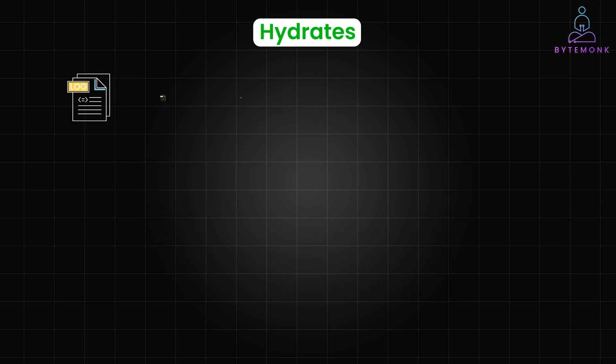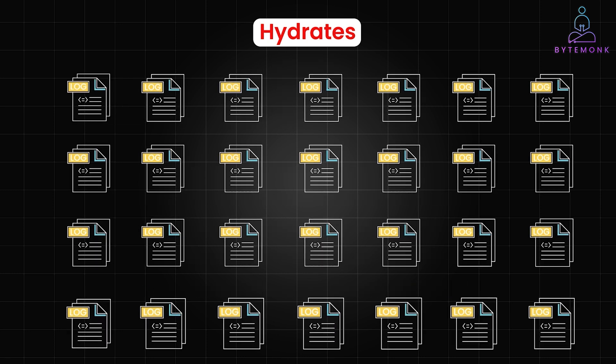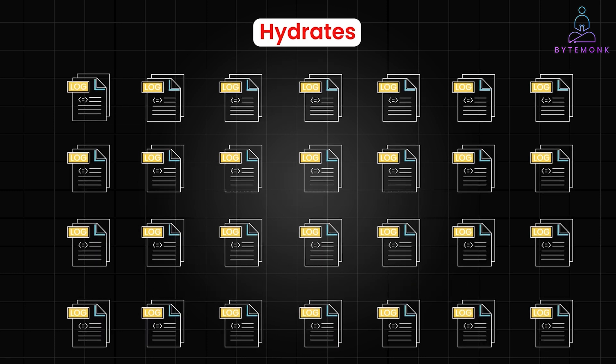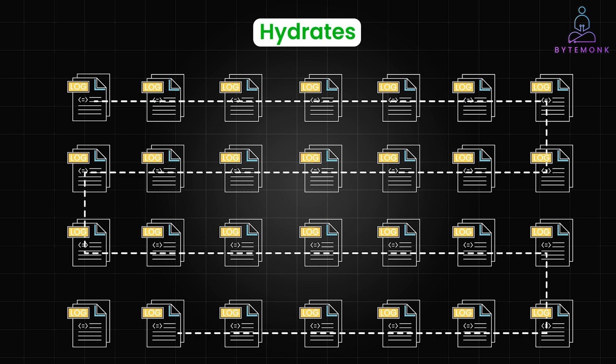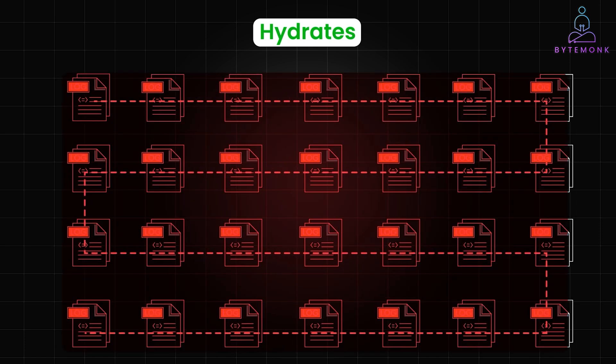But as the number of events grows, hydration can become slow. If your product has thousands of events, replaying all of them to get the current state is inefficient. Furthermore, in many systems, queries for the current state are frequent, and constantly hydrating the state from scratch for each query introduces performance bottlenecks.